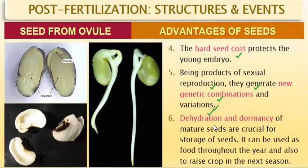Dehydration and dormancy of mature seeds are crucial for storage. If there is moisture in the seeds, they can become contaminated by pests and insects. For proper storage of food grains, moisture content must be kept low. If seeds are stored in a moisture-free environment, they can be used throughout the year, both as food and for raising the next crop.